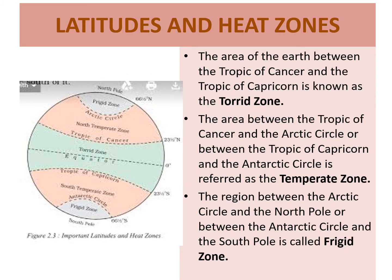Important latitudes and heat zones — here you can see a figure showing the important latitudes and heat zones. As you know, latitudes are measured in degrees and the value of the equator is zero degrees. The equator divides the globe into two equal halves.